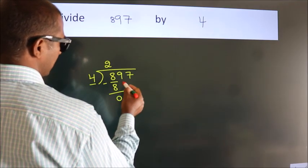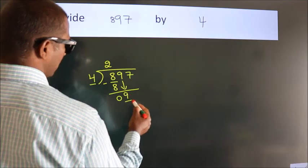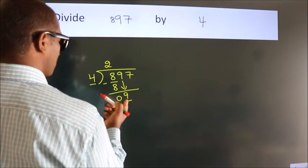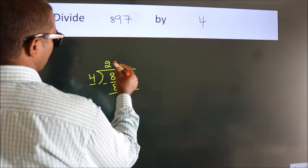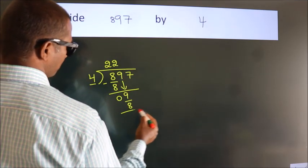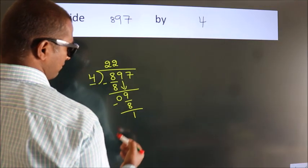After this, bring down the beside number, so 9 down. A number close to 9 in the 4 table is 4 times 2 equals 8. Now we subtract and get 1.